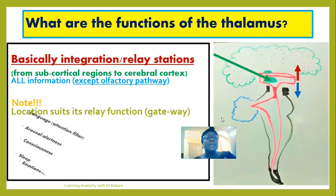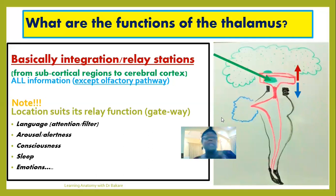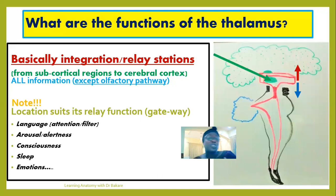Other functions of the thalamus include contributions to language, arousal, consciousness, sleep, and emotion. The thalamus is made up of a number of nuclei, which serve as passageways for different pathways that exert different actions — these actions are also part of its functions. When we get to the histology of the thalamus, we will look at the different nuclei and the functions they exhibit.